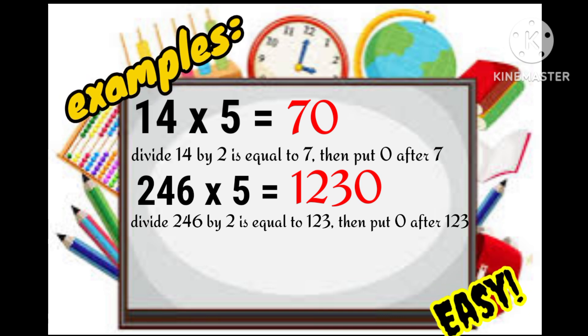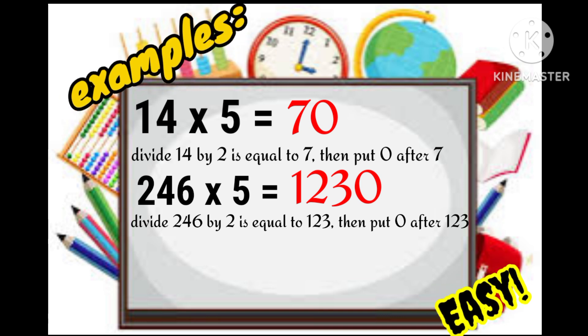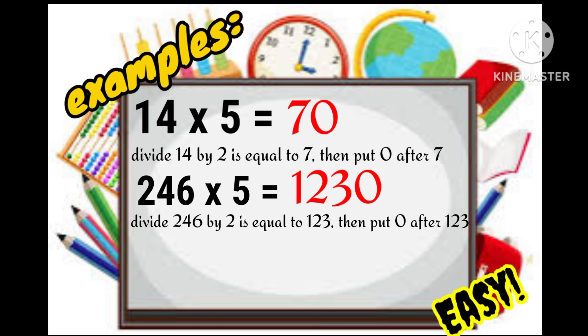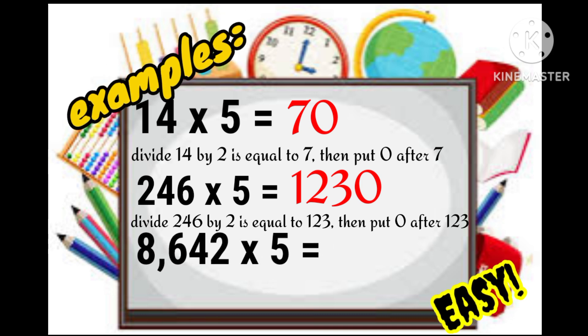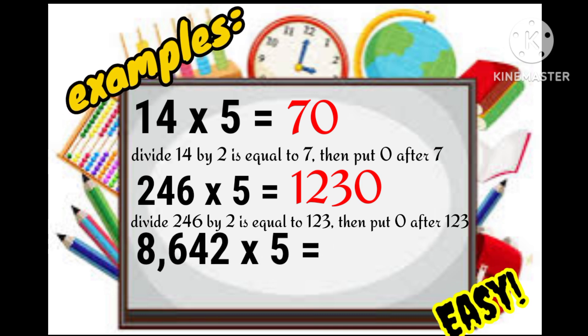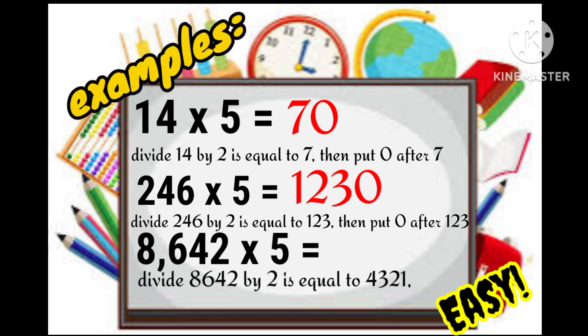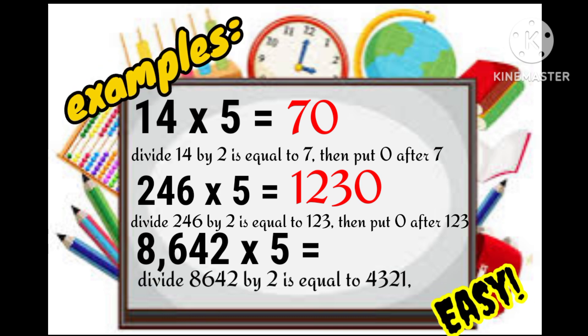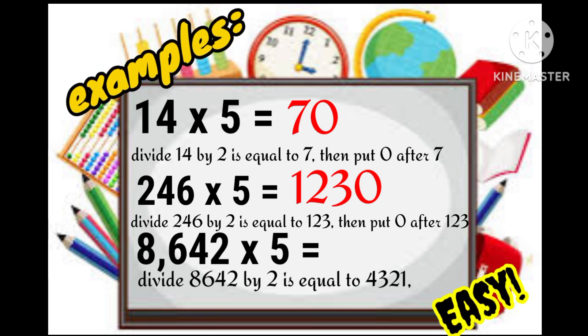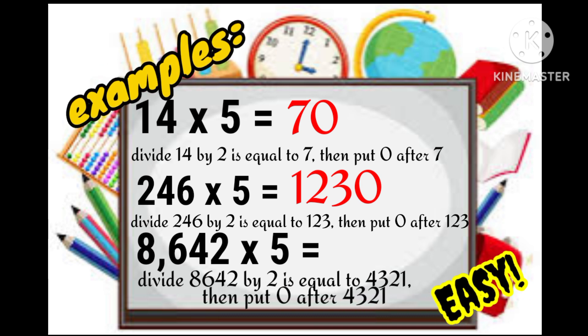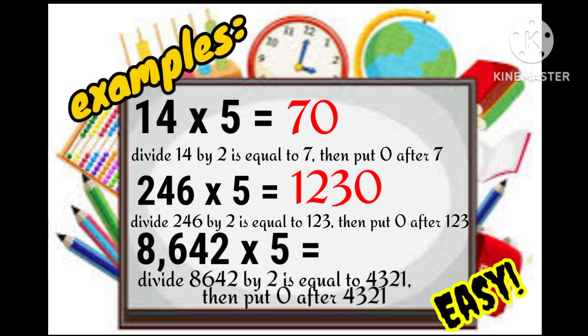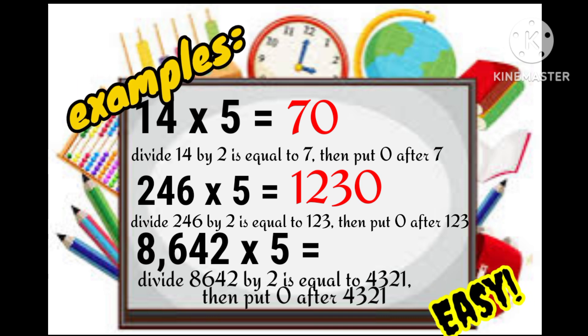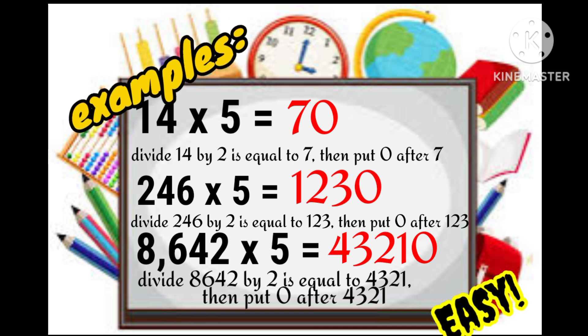Isn't it easy? If you think you can follow the steps, try to multiply 8,642 times 5. So we divide 8,642 by 2 which is equal to 4321. Then we put 0 after the number 4321. So that means 8,642 times 5 is equal to 43,210.